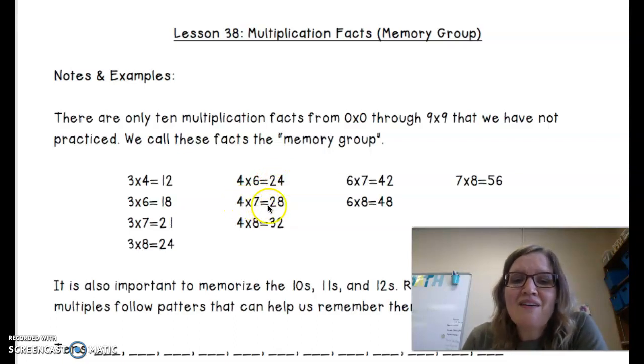4 times 7 equals 28. 4 times 8 is 32. Here's another where it's even, even, 32. 6 times 7 equals 42. 6 times 8 equals 48. 7 times 8 equals 56.